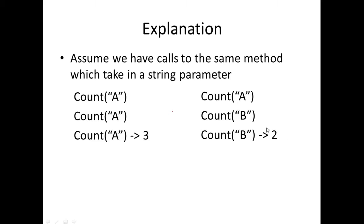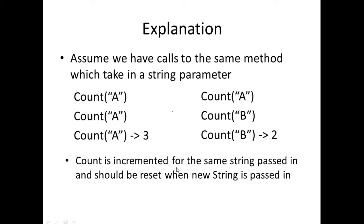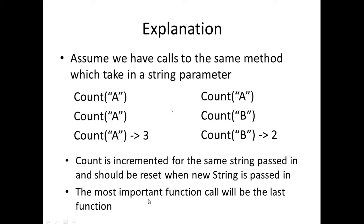If we call this method one more time and pass in 'b', the value we get is two. The last method called is the value we're most concerned about. Basically, the count is incremented for the same string passed in and should be reset when a new string is passed in.